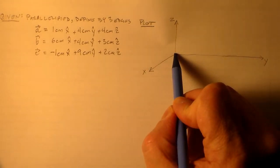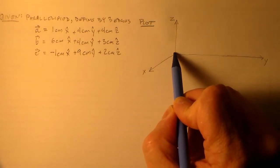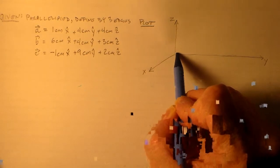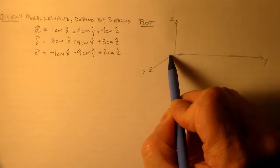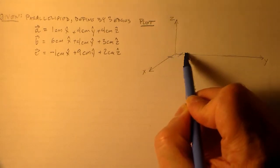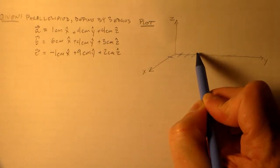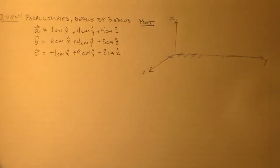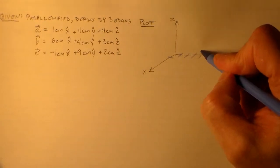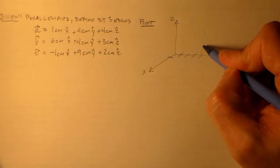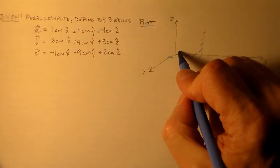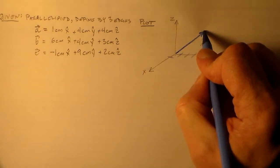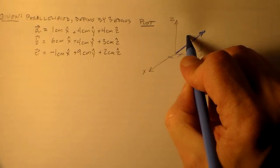Let's do vector A first. A is one centimeter in the x direction, four centimeters in the y direction, and four centimeters up in the z direction. So this is our first edge — our defining vector A.